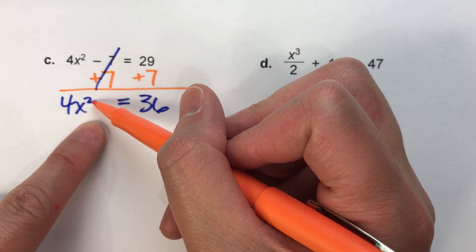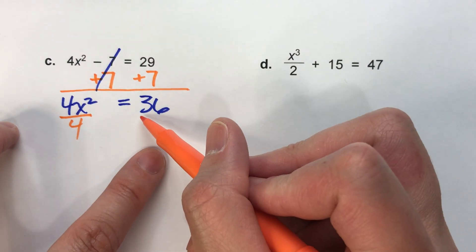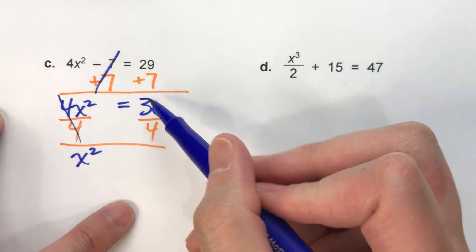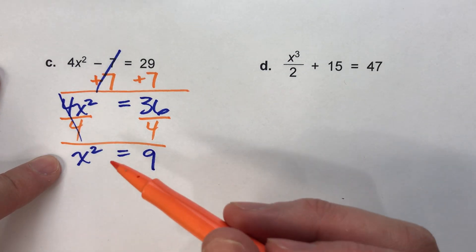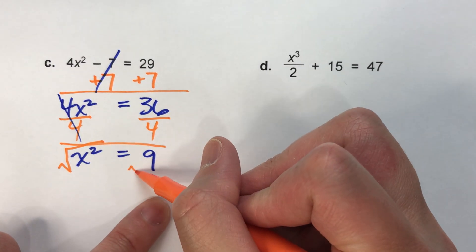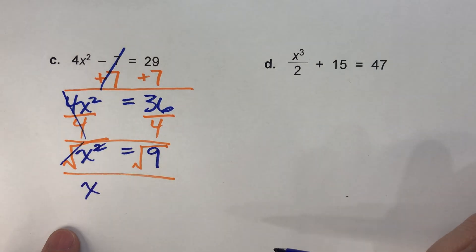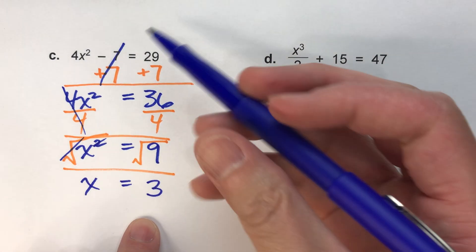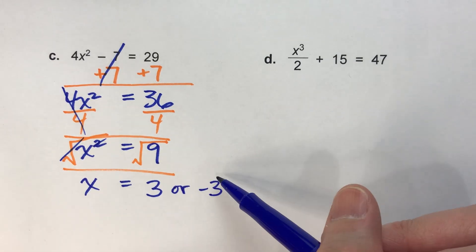The 4x squared drops down, equals drops down, and this side is 36. Now we have x squared multiplied by 4, so we divide both sides by 4 — the 4s undo each other, x squared drops down, and 36 divided by 4 is 9. Now we've got x squared, so we square root both sides. Squaring and square rooting undo each other, leaving x. The square root of 9 is 3. But don't forget — we undid x squared, so there are two answers: x equals 3 or negative 3.